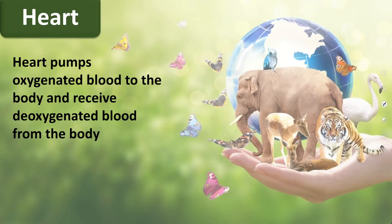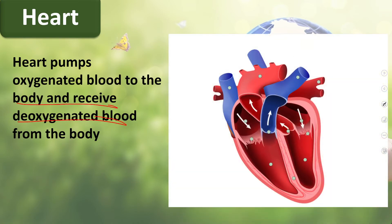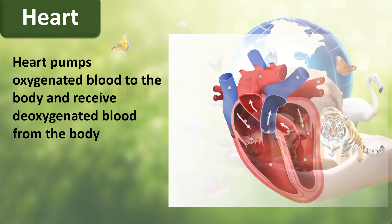To summarize: the heart pumps oxygenated blood to the body and receives deoxygenated blood from the body. This is the four-chambered heart of humans.